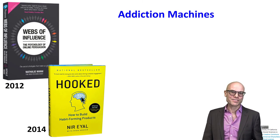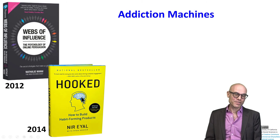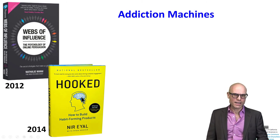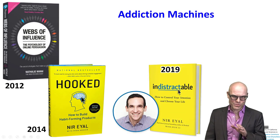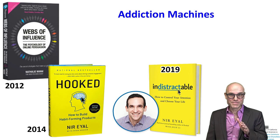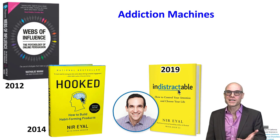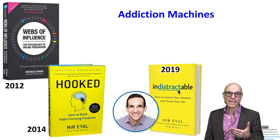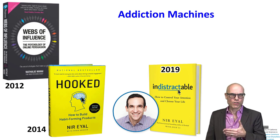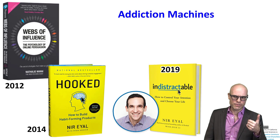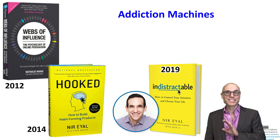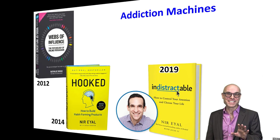Some of these authors — for example, Nir Eyal, who wrote the famous bestseller Hooked — a few years later, after some heartfelt conversations with his daughter, realized they were doing some things that might not be okay. So he wrote a follow-up book called Indistractable, which explains how, after getting you hooked, you can make yourself indistractable from all the distractions. It's basically a full-time job to keep up with these suggestions.